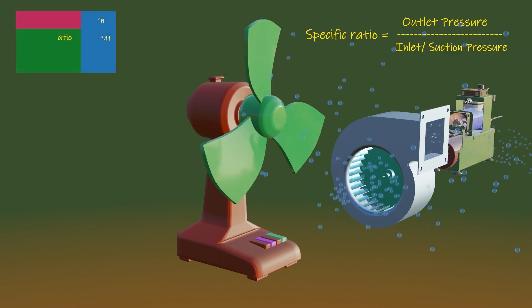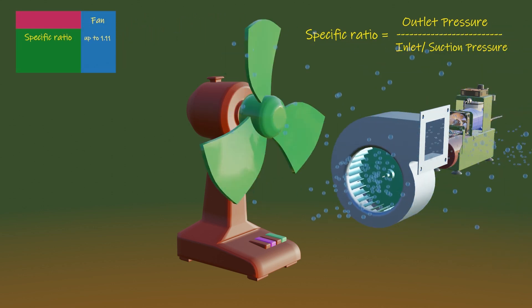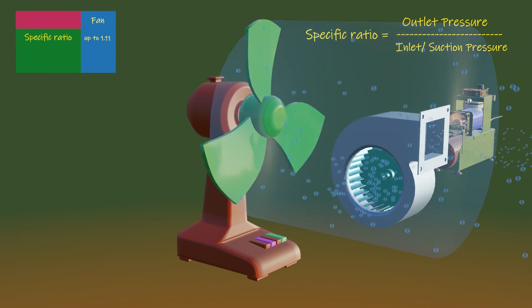Fans are generally considered to have pressure ratios up to 1.11. A fan circulates the air around an entire room. It can displace a large volume of air with a very low increase in pressure.